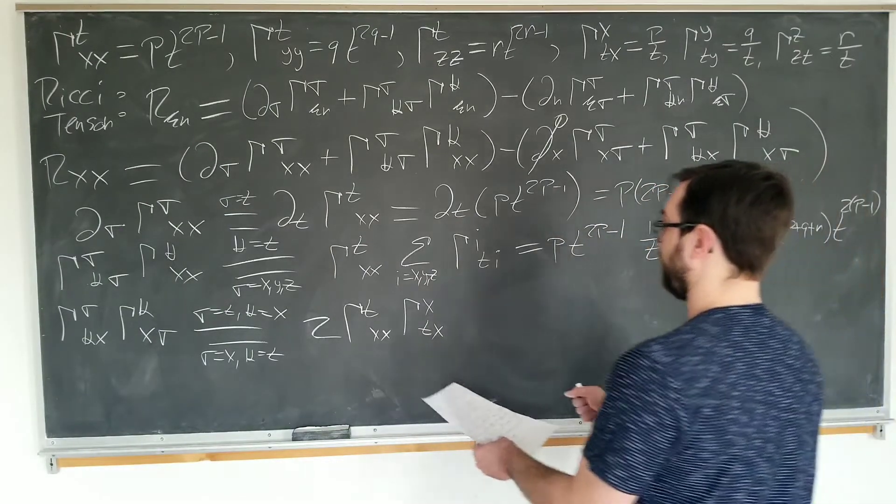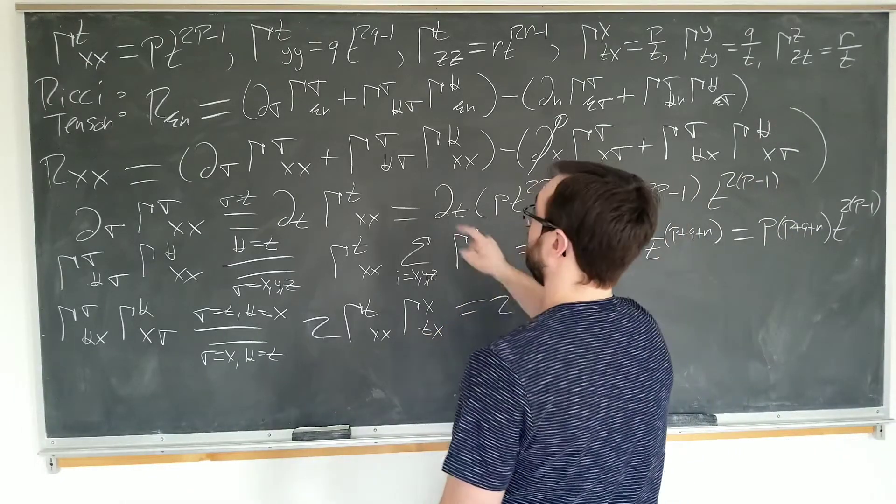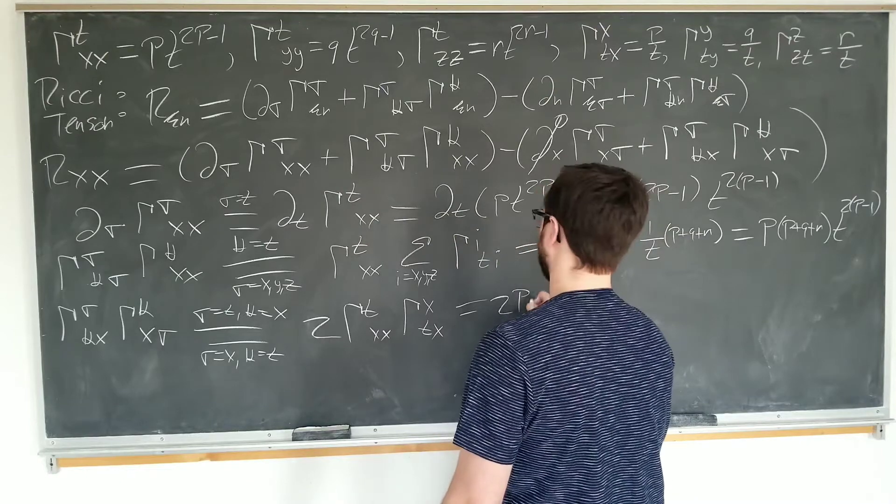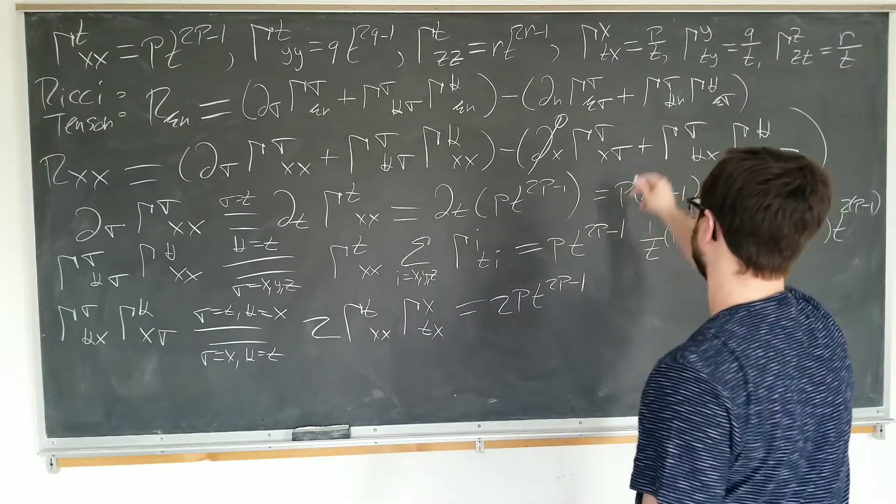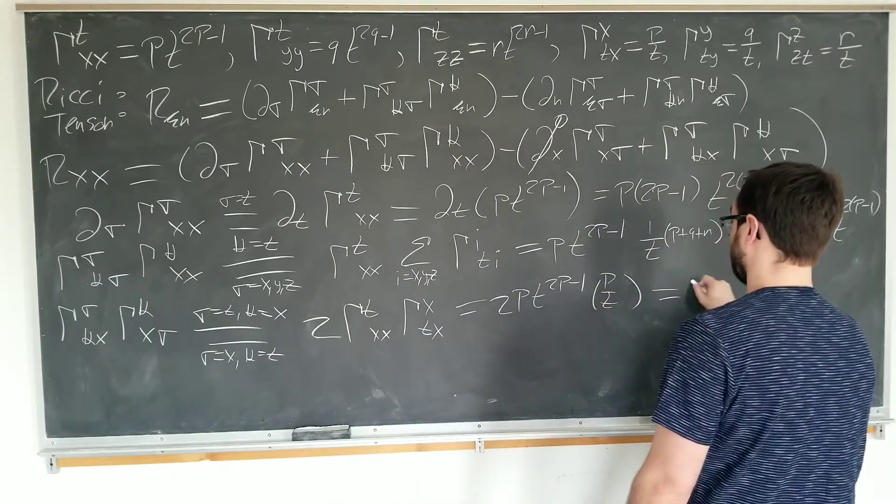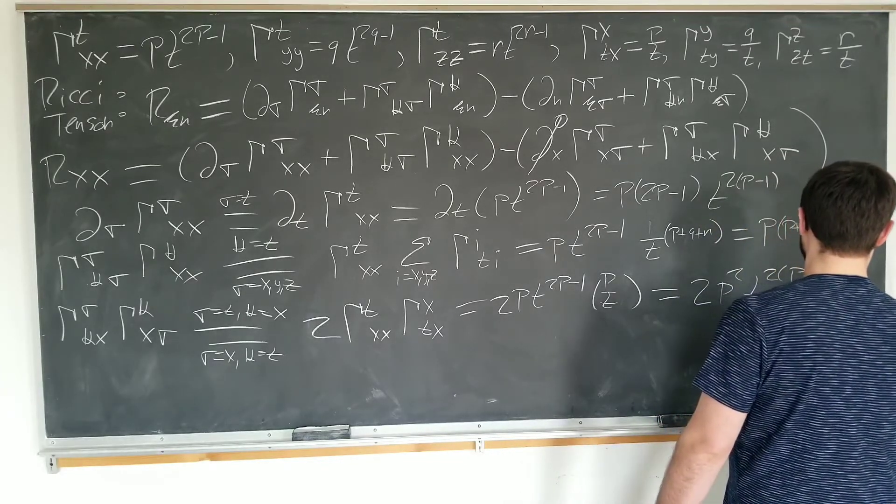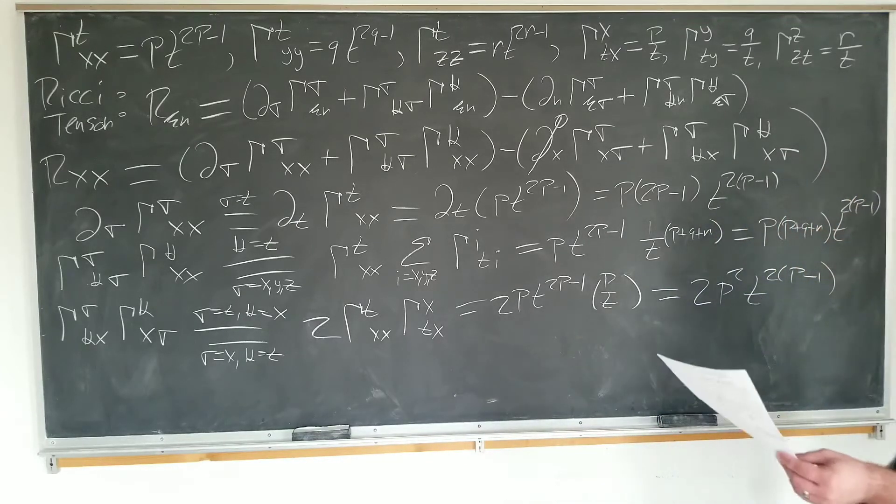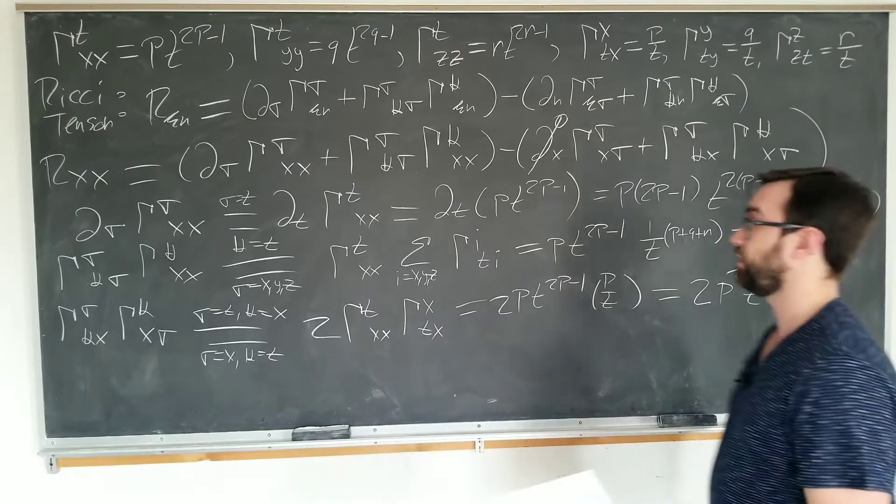Okay. Upon doing this, okay, t x x x t x. 2*t x x*P*T^(2P-1). X t x, just P over T, which simplifies to 2*P squared*T^(2P-1). And now we have all the components that we need to add them all together and to get our Christoffel symbol.